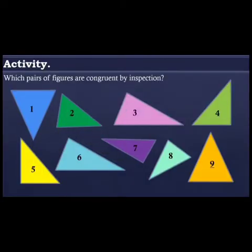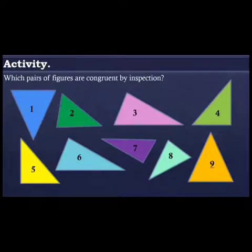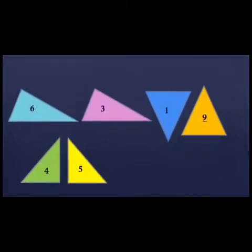Let's have first an activity. By the way, this is just a recall. I want you to identify which pair of figures are congruent by inspection — you may just say the number. So we have: 1 and 9, 6 and 3, and 5 and 4.